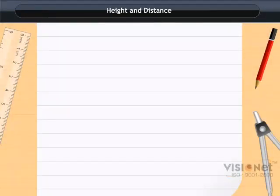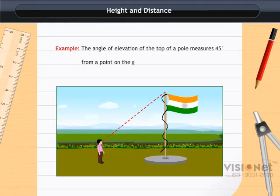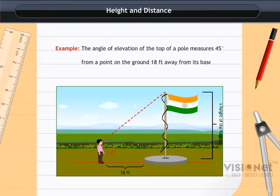Let us understand it with the help of an example. The angle of elevation of the top of a pole measures 45 degree from a point on the ground 18 feet away from its base. Find the height of the pole. Let us solve it step by step.